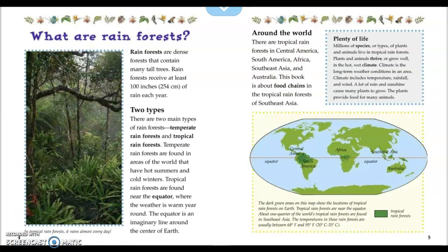What are rainforests? Rainforests are dense forests that contain many tall trees. Rainforests receive at least 100 inches of rain each year. There are two main types of rainforests: temperate rainforests and tropical rainforests. Temperate rainforests are found in areas of the world that have hot summers and cold winters. Tropical rainforests are found near the equator, where the weather is warm year-round.